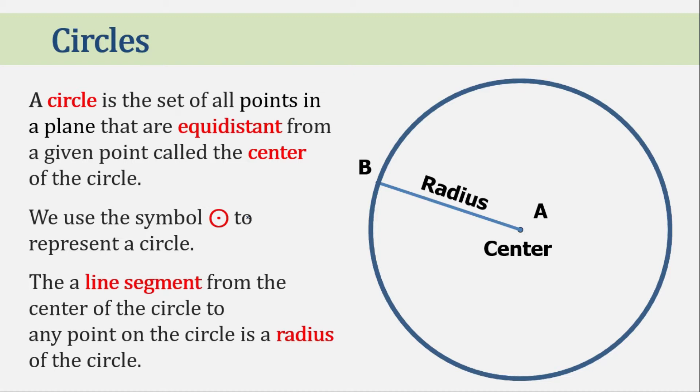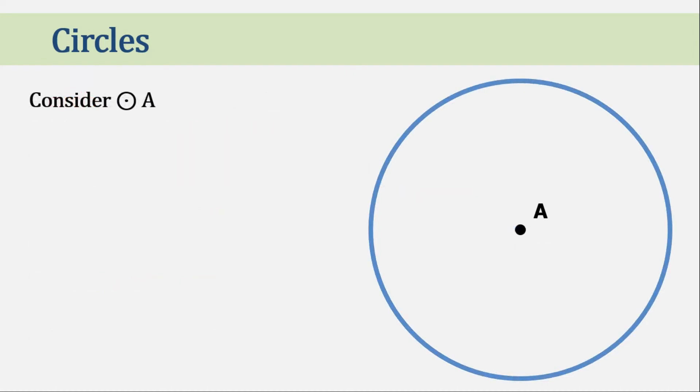Now let's dig deeper into the parts of the circle. Again, let's consider circle A. We know that all of these are points. Now let's pop up one point and name it point B. Now let's connect point A and point B. Now we created segment AB. And segment AB is a radius.